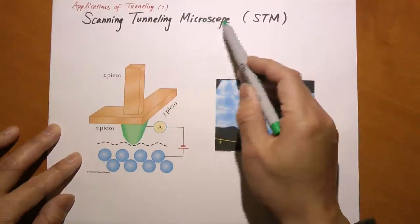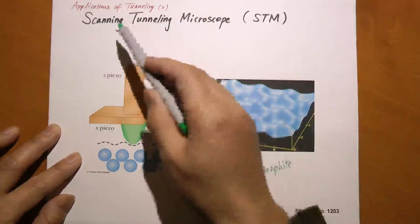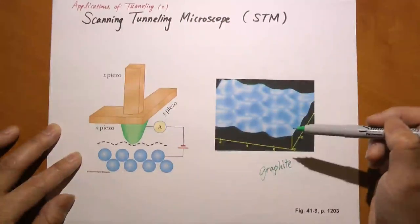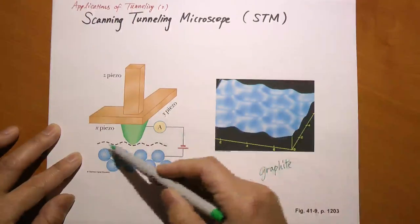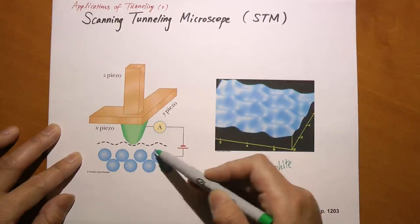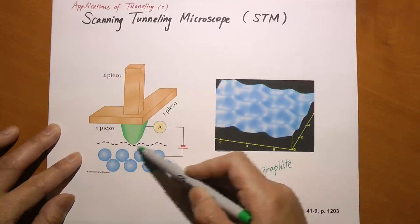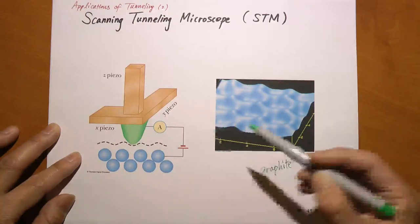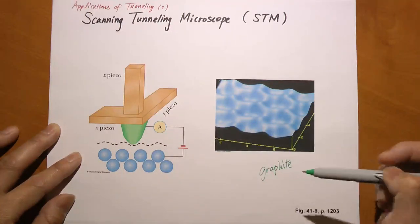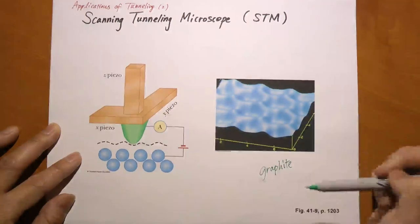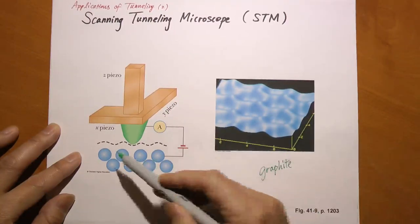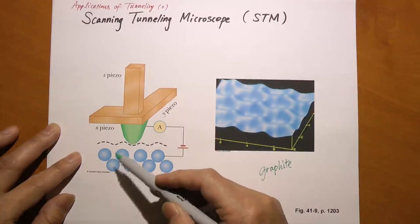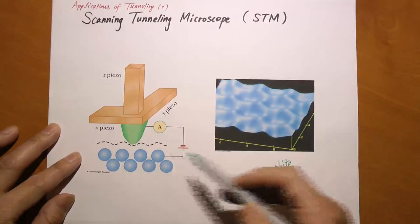How does this thing work? Scanning tunneling microscope - what does scanning mean, what does tunneling mean here? I want to look at the surface arrangements of atoms on a conducting material such as graphite. I want to know how the atoms on the surface are laid out.